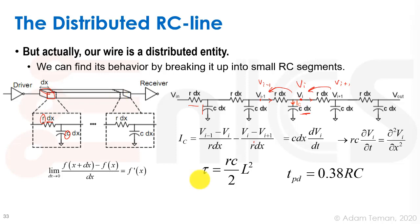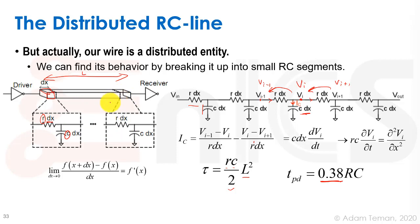The time constant tau of this distributed wire is r·c·L²/2, where L is the total wire length, and TPD = 0.38RC, where R = rL and C = cL are the total resistance and capacitance. Recall that the lumped model gave 0.69RC. So the actual time for the wave to reach VDD/2 at the receiver is about half of what the lumped model predicted — the lumped model is pessimistic.